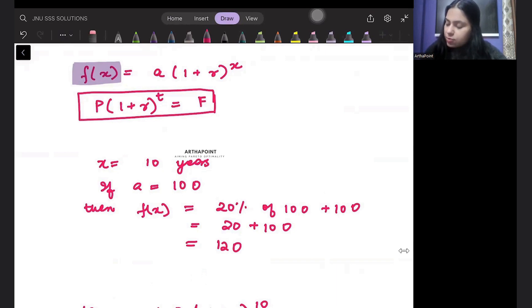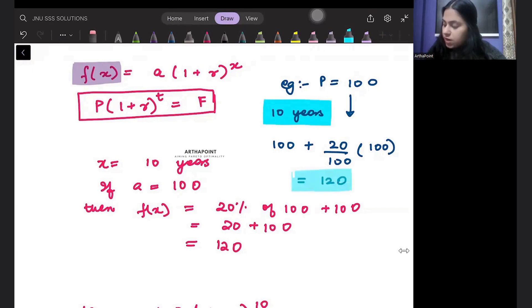Take an example. Suppose I tell you that you have 100 rupees with you, your principal amount is 100, and now I am telling you that it has increased by 20%. So what will happen after 10 years? After 10 years, you will definitely have these 100 rupees with you.